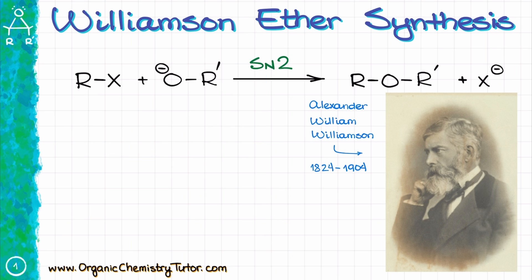Alexander William Williamson, this seriously looking gentleman, introduced the ether synthesis that bears his name in 1850. In his pioneering paper, he presented empirical evidence of ether formation under acidic and basic conditions. At that time, the underlying mechanism of the chemical reactions were basically a mystery, limiting Williamson's ability to explain his findings.